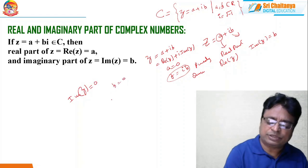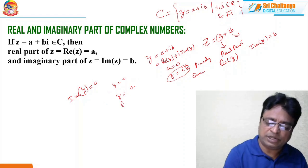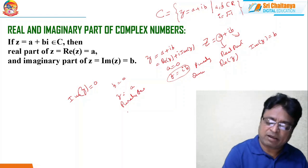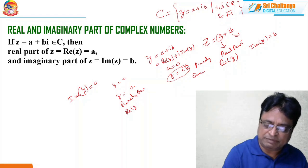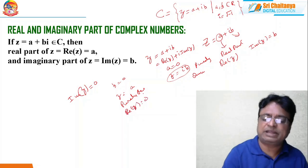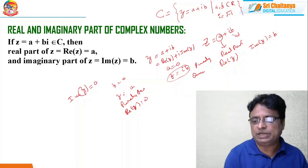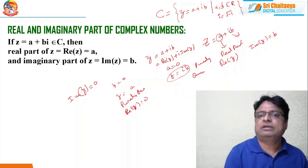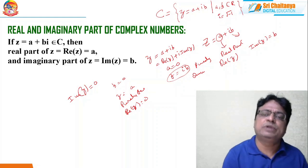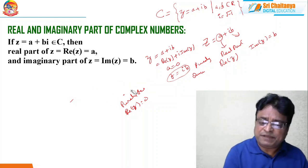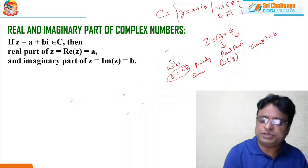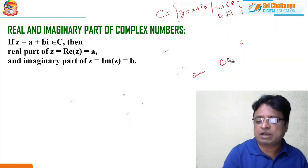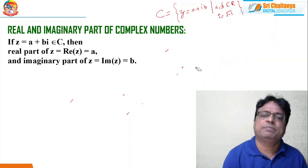Whenever b = 0, then z becomes a only. In this case it is called purely real. So when can I say a complex number is purely real? When Im(z) = 0. Whenever Im(z) = 0, then that is purely real. Whenever Re(z) = 0, then that is purely imaginary. And a complex number is said to be non-zero if at least one of a, b is not equal to 0. That is very very important.